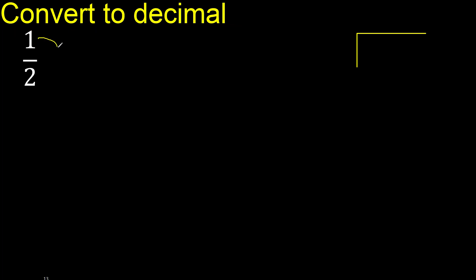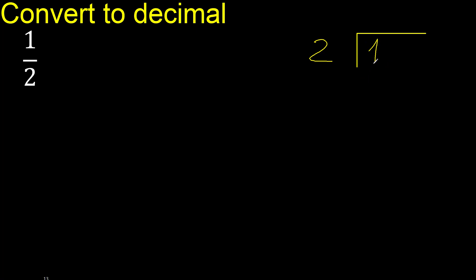1 divided by 2. 1 is less than 2, therefore complete — always complete with 0.